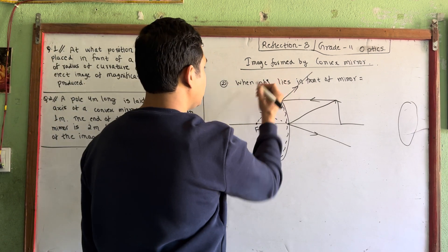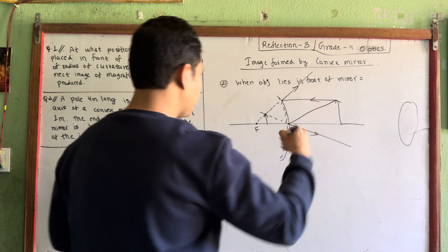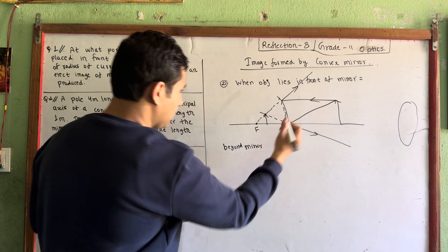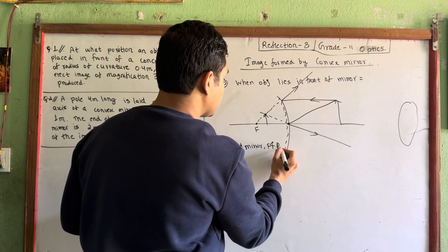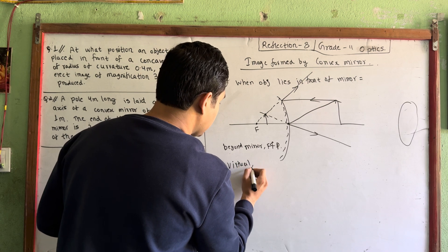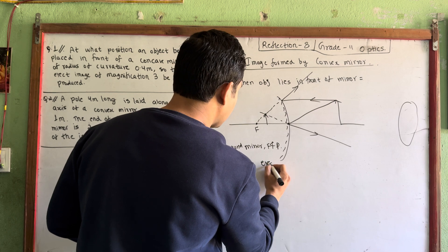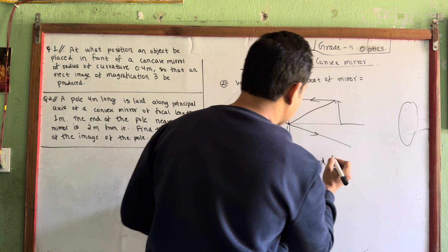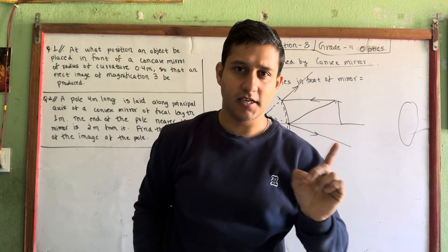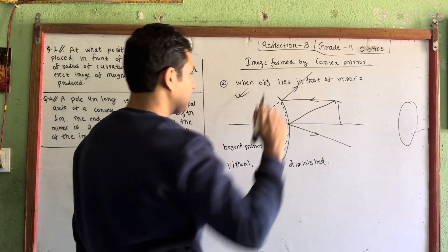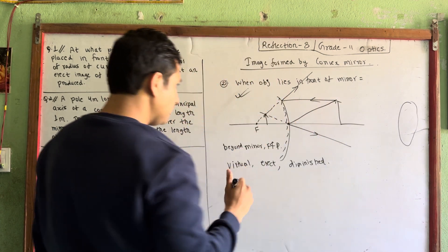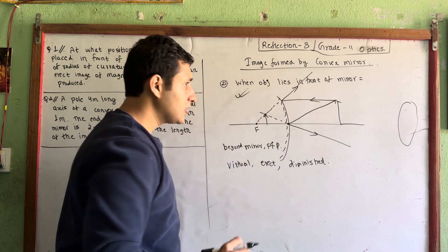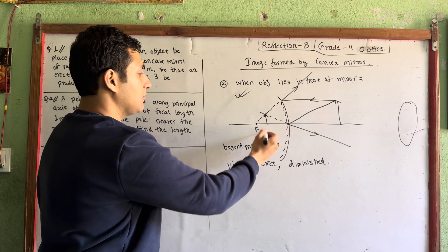The image is formed beyond the mirror. I will use this mirror to show focus and pole. The image is virtual. Number 2: this mirror image will be erect and straight. Number 3: it will be diminished. This mirror is used in cars — if you have a mirror in the car, you can use this principle. Objects in the mirror are closer than they appear.